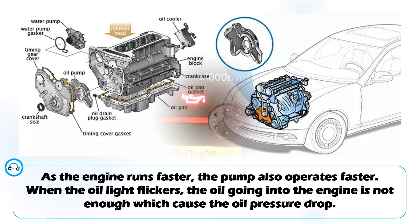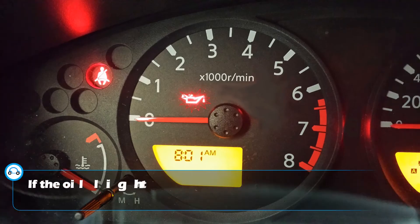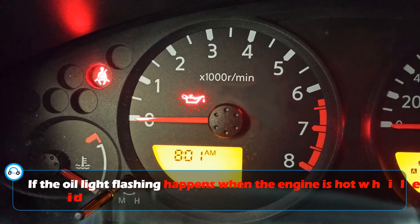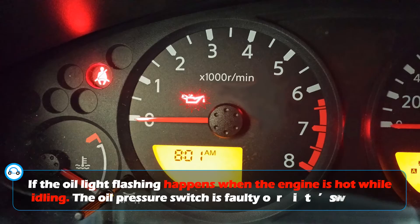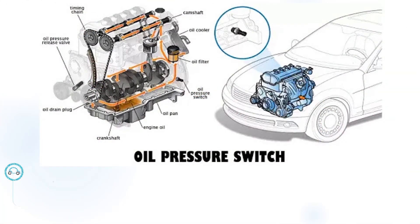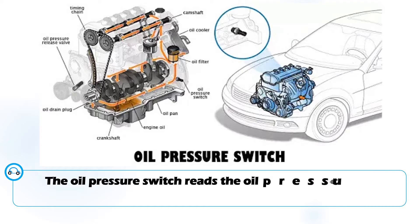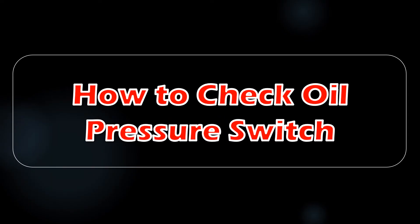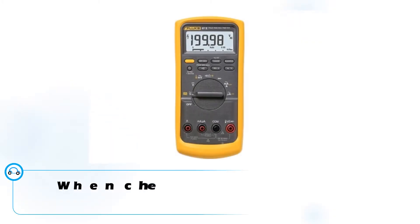If the oil light flashing happens when the engine is hot while idling, the oil pressure switch is faulty or its wiring is loose. The oil pressure switch reads the oil pressure inside the engine. When the switch or its wiring is bad, the switch will not correctly read the pressure inside the engine, and thus the oil warning light will flicker occasionally. Check the oil pressure sensor including its wiring.